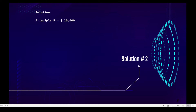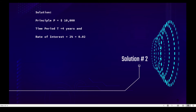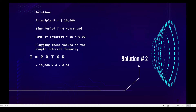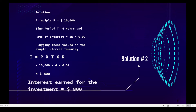Our principal is ten thousand dollars, the time period is four years, and our rate of interest is two percent, or 0.02. Plugging these values into the simple interest formula, substitute the given: ten thousand times four times 0.02 equals eight hundred dollars. So the interest earned for the investment was eight hundred dollars.